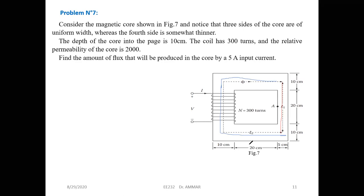The depth into the page is 10 centimeters. The coil has 300 turns and the relative permeability is 2000. We need to find the amount of flux that will be produced in the core by 5 amps of current.